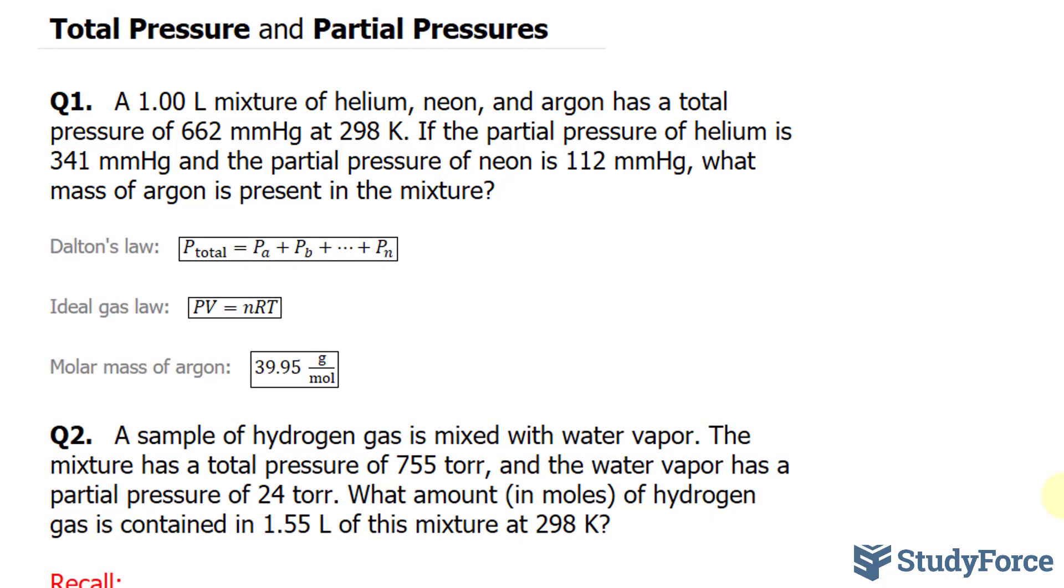Let's start by writing out everything we know. We've been told the volume, and I'll represent that as V is equal to 1.00 L. We've also been told that the total pressure, which I'll say is P sub T, is 662 mmHg. And that's at 298 K. So our temperature is 298.